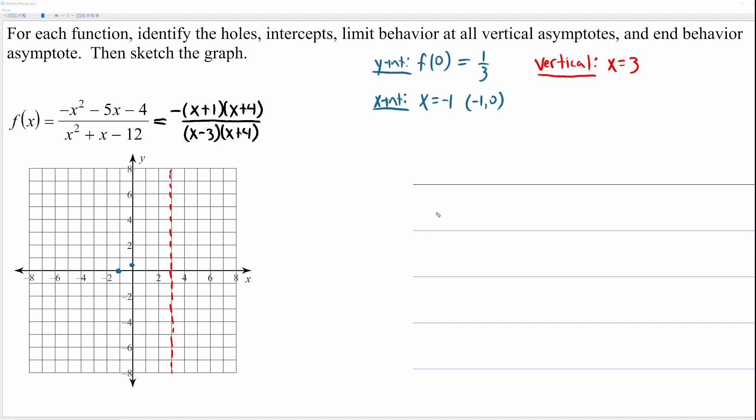Now, let's find our end behavior asymptote, otherwise known as a horizontal asymptote. And again, you may or may not remember from algebra two. But if the degree of the top and bottom are the same, like they are here, so the degree of the top equals the degree of the bottom, the horizontal asymptote occurs at the ratio of the leading coefficients. So, the leading coefficients here are negative one and positive one. So, the horizontal asymptote occurs at negative one over positive one. Of course, simplify that. So, we have an end behavior asymptote, a horizontal asymptote at negative one.